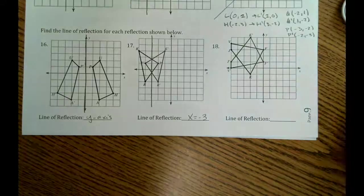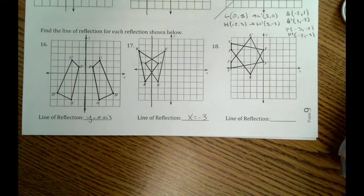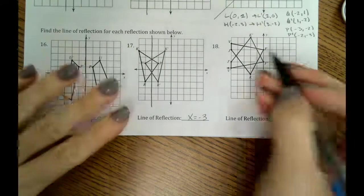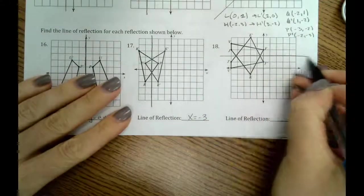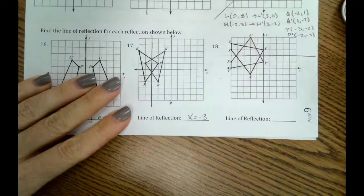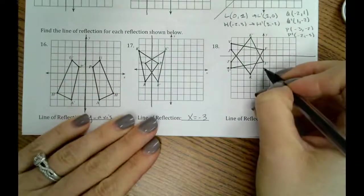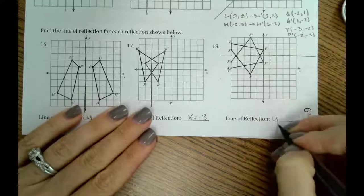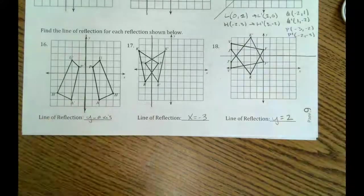And then let's see, our line of reflection here. Okay, this one looks like it's going to be horizontal. So if we count 1 for j and 1 for j prime, we're good. Same thing with f. So it looks like this one would be at 1, 2, y equals positive 2.